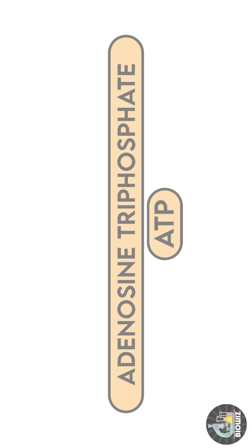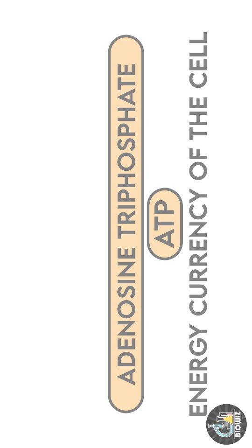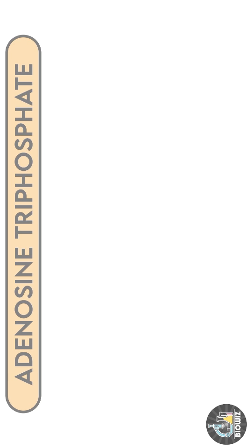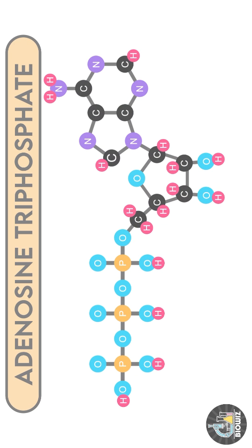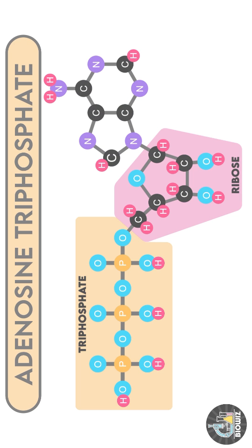ATP or adenosine triphosphate is the energy currency of the cell. It is a type of nucleoside triphosphate which consists of ribose sugar, 3 phosphate groups and adenine as a nitrogenous base.